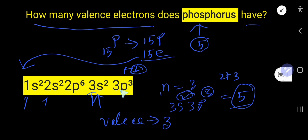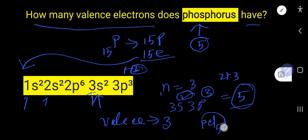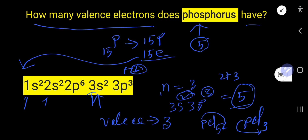Sometimes phosphorus can also show a valence of 5. For example, in phosphorus pentachloride (PCl₅), the valence of phosphorus is five. But in phosphorus trichloride (PCl₃), the valence of phosphorus is three.